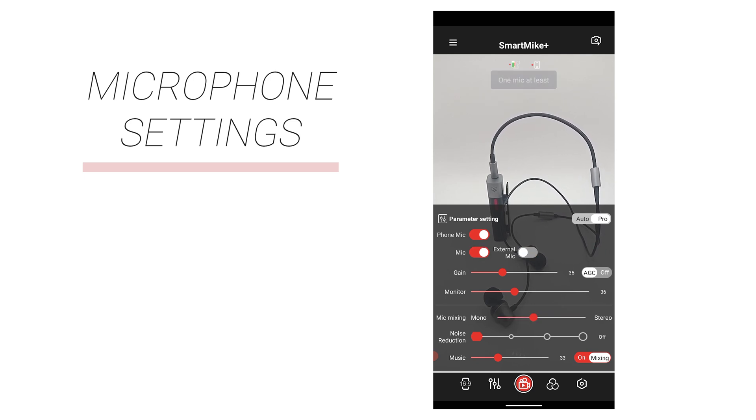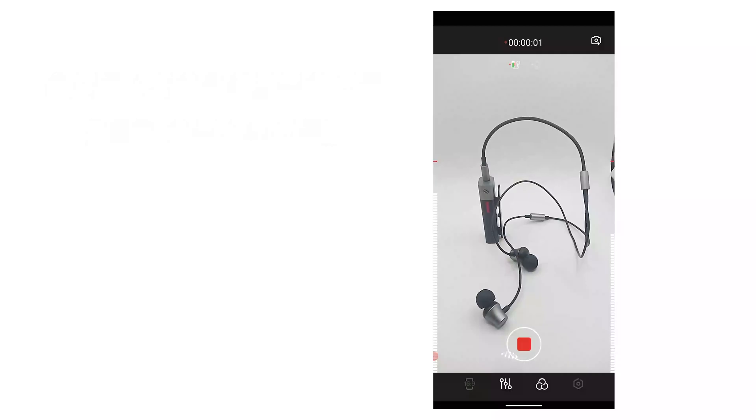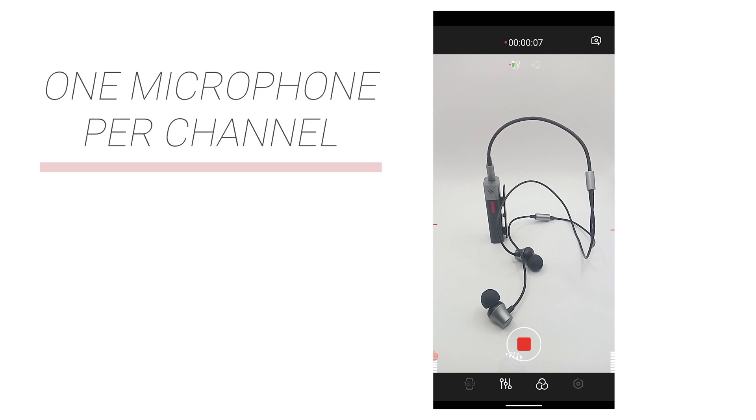Here we can choose which microphone to use. We can either use one single microphone or use two. The important thing to note is whether you use a single microphone or a dual microphone, the audio tracks you record are all in stereo. When you use a single microphone to record, you will get two identical audio tracks. If you use dual microphones to record, your left and right audio channels will come from the two microphones instead.